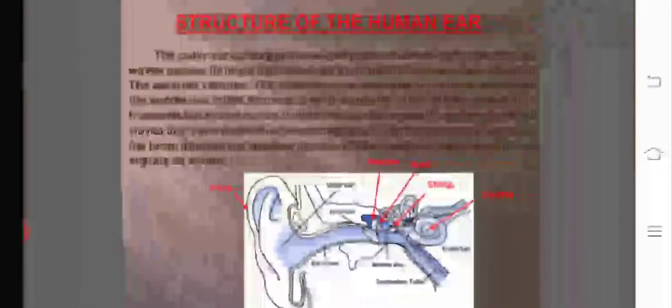Structure of the human ear. The outer ear called pinna collects the sound waves. The sound waves pass through the ear canal to a thin membrane called ear drum. The ear drum vibrates. The vibrations are amplified by three bones of the middle ear called hammer, anvil and stirrup. The middle ear then transmits the sound waves to the inner ear.